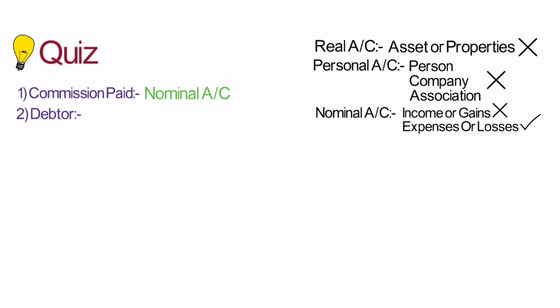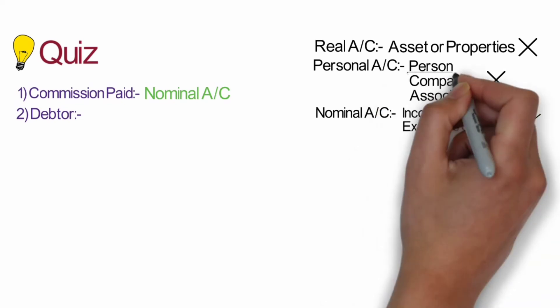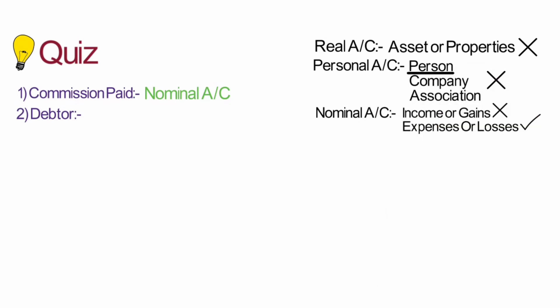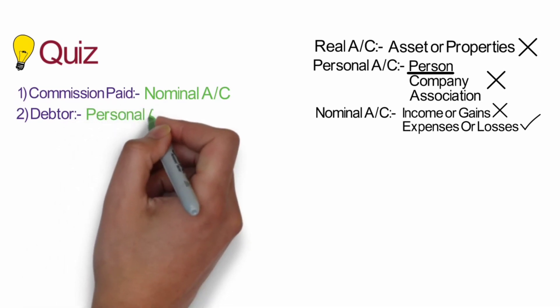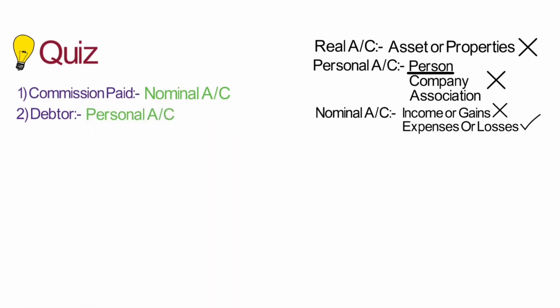Debtor is a person who will pay the money in future. Since a debtor is a person, and persons are related to personal accounts, debtor is a personal account.